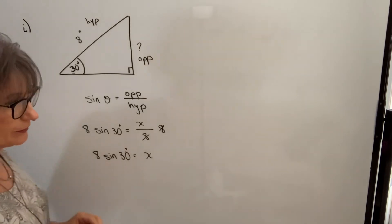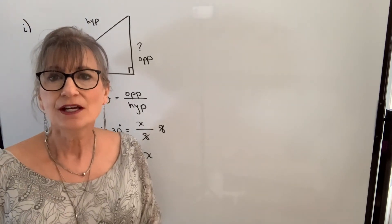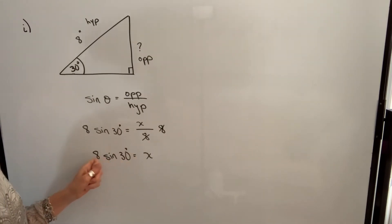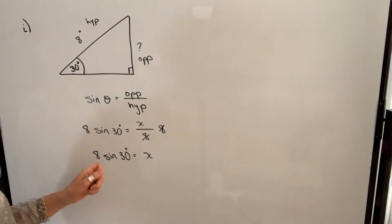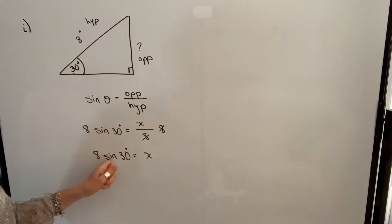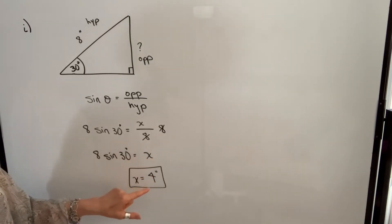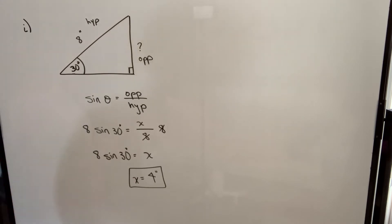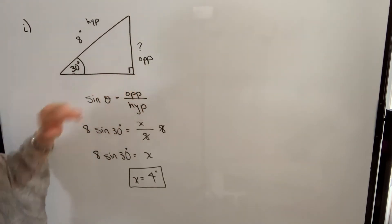Now I'm going to plug this into my calculator: 8 times the sine of 30 degrees. If you're using a Texas Instruments calculator, you are going to put in your angle first — 30 degrees — then take the sine and multiply by 8. Some of you with other calculators can type it in exactly as you see it: 8 times the sine of 30 degrees. When you do the calculation, you should get X equal to 4 inches, so that means this side is 4 inches long.